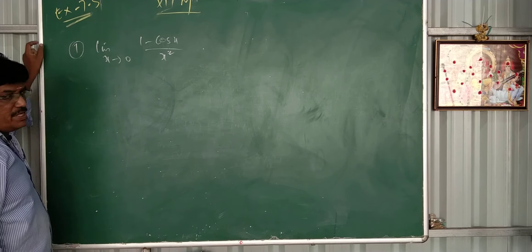See, cos 0 is 1, so 1 minus 1 equals 0 in the numerator. Down, X square becomes 0. So this is 0 by 0 form.